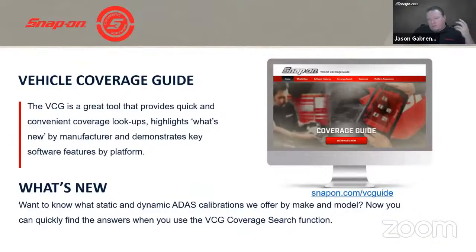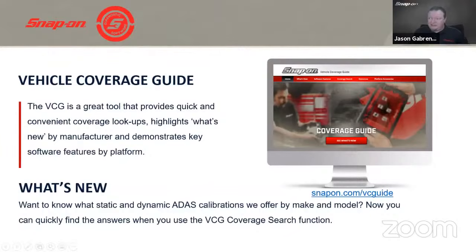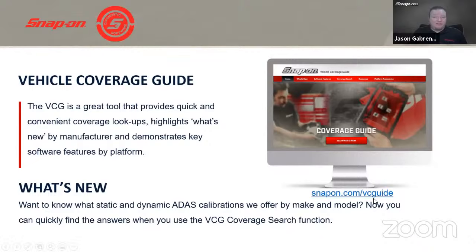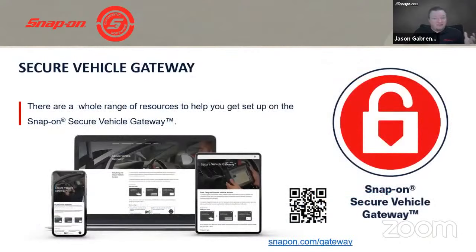If you want to know exactly what's new for a specific vehicle, the easiest place to check is our interactive vehicle coverage guide at snapon.com/VCguide. You can search by scan tool, by year/make/model, and it will tell you whether codes, functional tests, PIDs, and other features are supported. New in this update: you can now quickly find what static and dynamic ADAS calibrations are offered by make and model using the coverage search function.